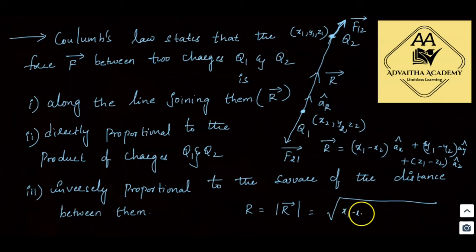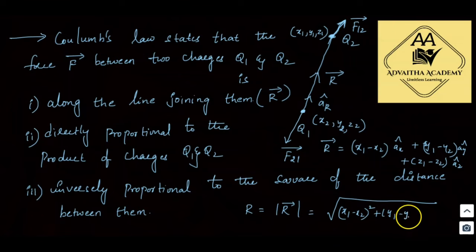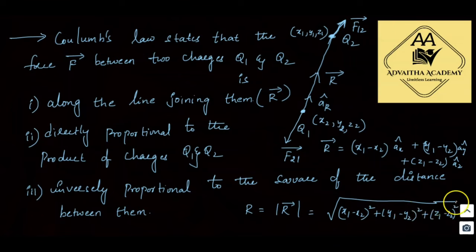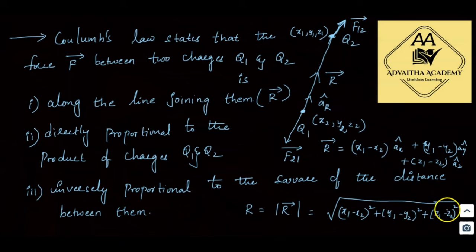So r² = (x1−x2)² + (y1−y2)² + (z1−z2)², which is the distance between the two points where the charges are located.